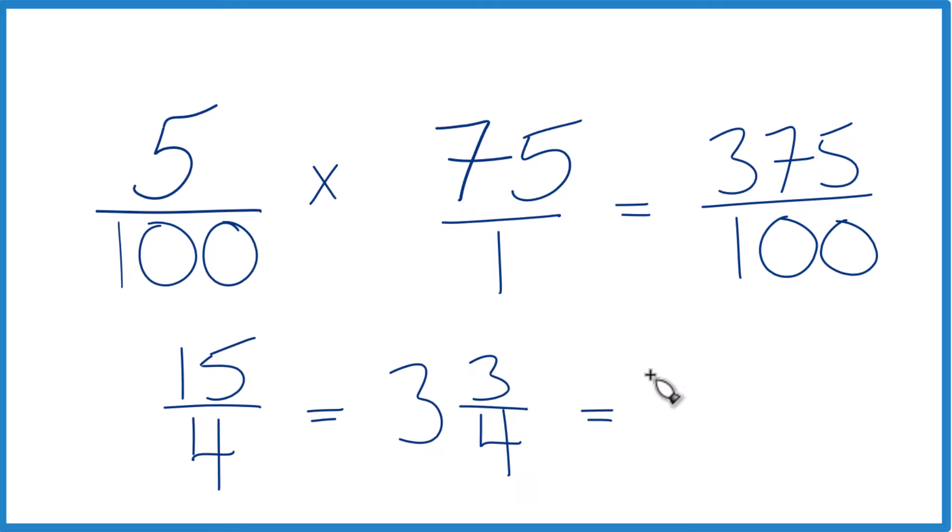You could write it as a decimal 3 and 3 fourths is equal to .75 there. So you could write it as a decimal 3.75, but that's how you find 5% of 75.